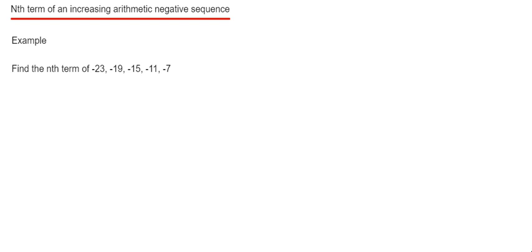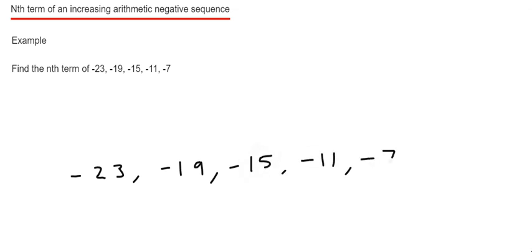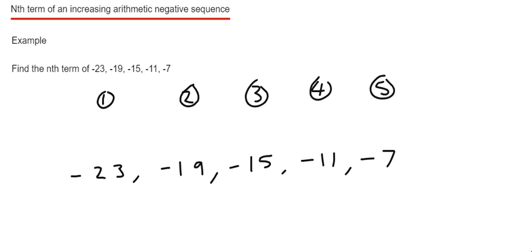So the first thing I'm going to do is write down my numbers in the sequence: minus 23, minus 19, minus 15, minus 11, minus 7. And I'm just going to write down the numbers 1 to 5 above. What we're trying to do is look for a rule which takes me from these numbers at the top to the numbers in the sequence.